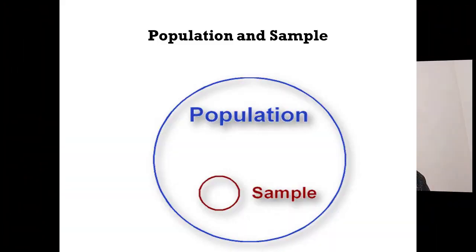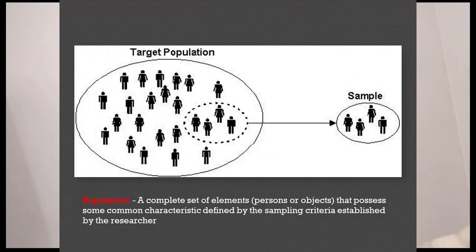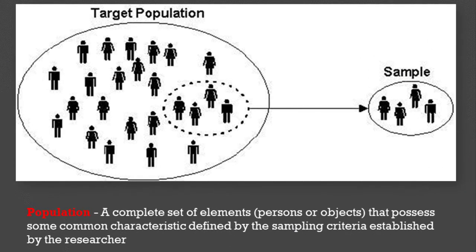So from the population, you take a sample. The target population is the complete set of objects that possess some common characteristic as defined by the sampling criteria established by the researcher. Population is the group of people who actually have the characteristics the researcher is seeking. In this case, we are checking if kids fall sick — so the kids share a similar characteristic in that some of them fall sick and some do not.